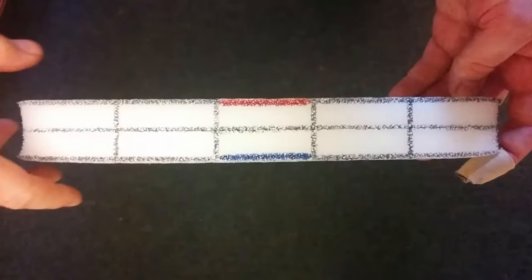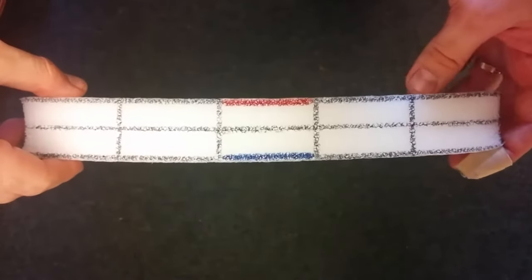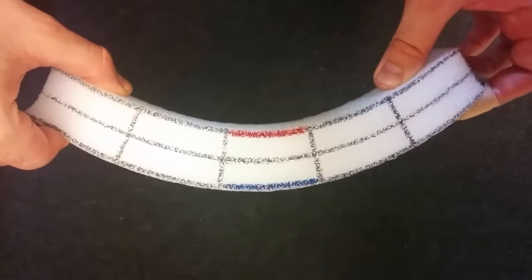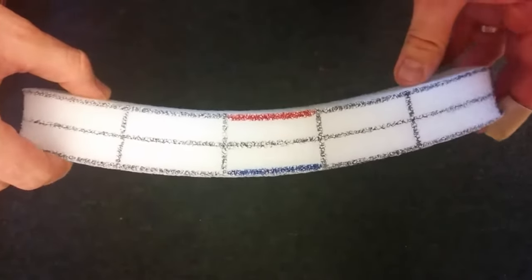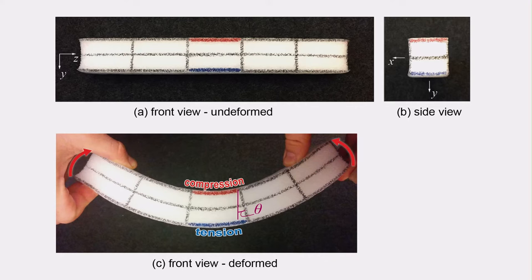Here I have a foam beam with a grid of lines drawn running along the length and through the thickness of the beam when it is undeformed. When I bend the beam back and forth, take a look at what happens to the grid lines, particularly the ones running through the thickness of the beam. On the screen you can see a snapshot of these grid lines in the undeformed and deformed state of the beam. What is important to note is that these lines remain straight but rotate as a result of the bending. This results in the material on one side of the beam being in compression while on the other side of the beam being in tension.